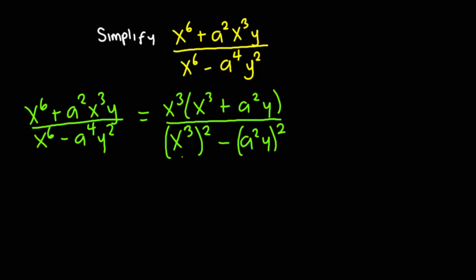And so that this represents difference of 2 squares. So this gives me x cubed into bracket x exponent 3 plus a squared y divided by,